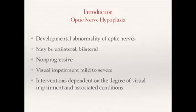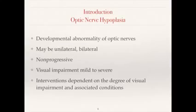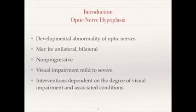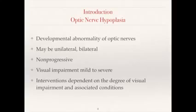ONH is emerging as a leading single cause of childhood blindness and visual impairment in the USA and Europe. Cranial nerve 2, the optic nerve, is actually directly synapsed or connected with the brain, unlike any of the other cranial nerves. The diagnosis is clinical. There are small optic nerves that are seen on examination of the eyes. An ophthalmologist uses direct visualization of the optic nerves and performs the examination.